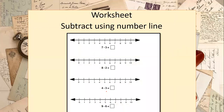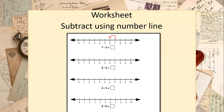We have a worksheet: subtract using number lines. The first question is 7 minus 3. We start from 7 and move backward, since subtraction means moving backward on the number line. From 7, we go to 6, then 5, then 4. We moved back 3 steps and are now on 4. So 7 minus 3 equals 4.